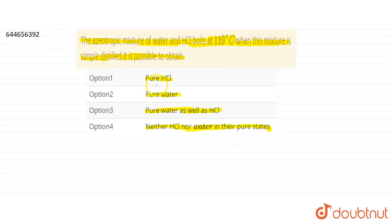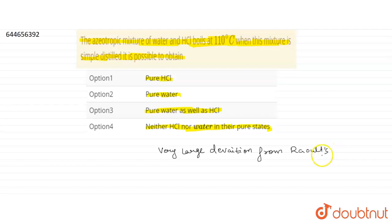First of all, we need to know what azeotropic mixtures are. Azeotropic mixtures are those mixtures which show very large deviation from ideality, or we can say very large deviation from Raoult's law. One more definition: these are mixtures of liquids which distill over without change in composition. That's why they are called constant boiling mixtures or azeotropic mixtures.